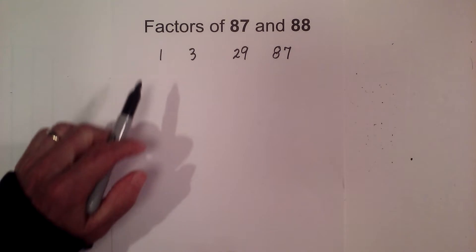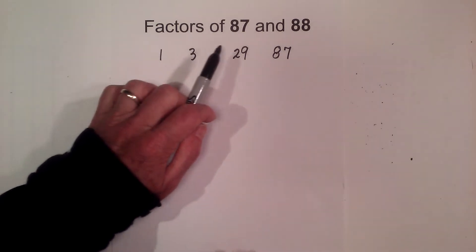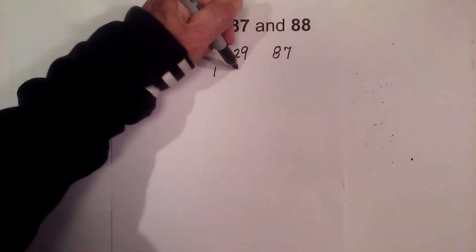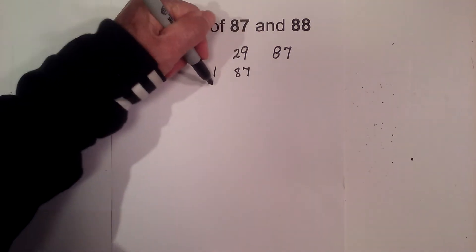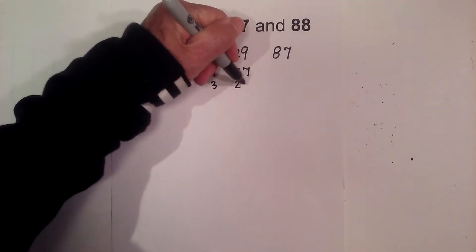So the factors of 87 are 1, 3, 29, 87, and that equals 1 times 87, or 3 times 29.